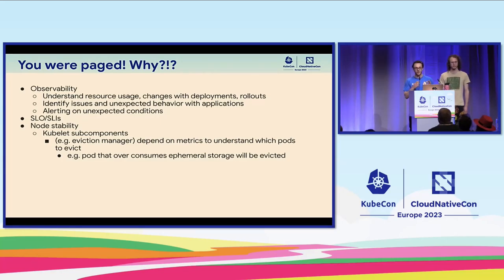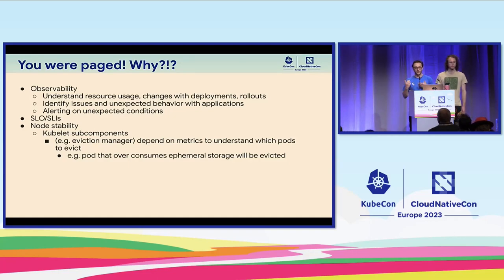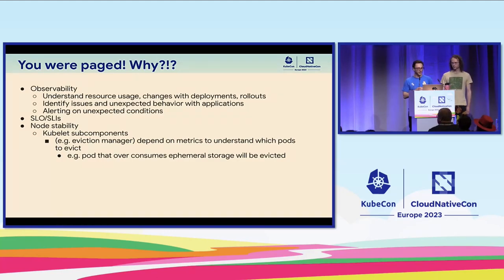Not just for you as the cluster admin or application developer, but the internal Kubernetes components also need monitoring and metric data to perform core functions. A good example is Kubelet — the worker agent running on every single node — which needs monitoring data to evict pods and understand which pod is consuming too much resources. For example, if you set an ephemeral storage limit on your pod, Kubelet needs to know how much storage your pod is actually using, because if you go over the limit, your application will be evicted.